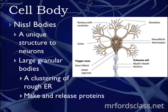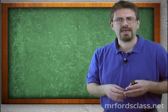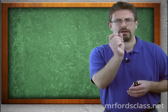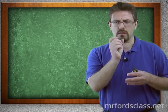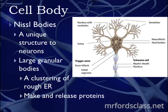One unique structure you'll find in the neuron's cell body is called the Nissl body. These are unique structures found only in the neuron — they are clusters of rough ER. If you're looking at a tissue sample under a microscope and you see little contained rough spots or differently colored areas in the cell body, you know you're looking at a neuron. Nissl bodies make and release proteins.